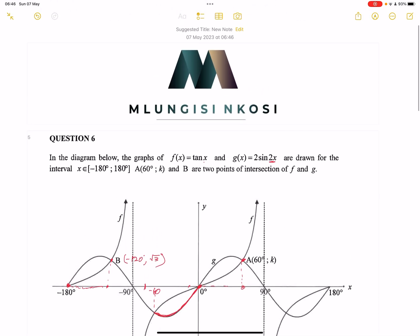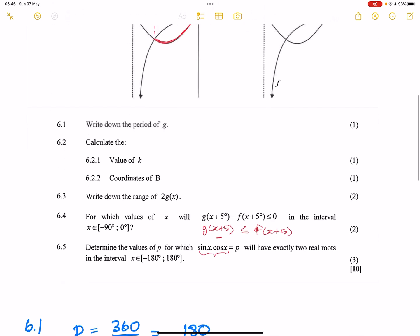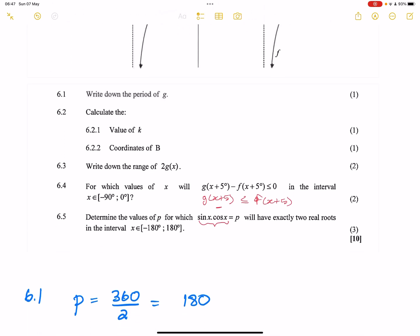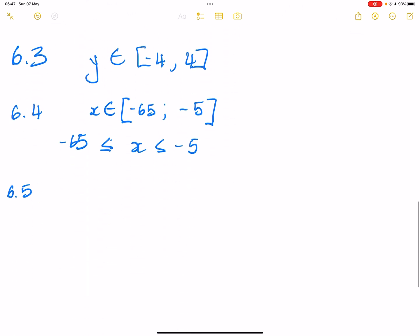Because think about it, when you expand that double angle formula, you will get 2 sin x cos x. So now, what we're going to do, let's try and write that out as the graph of g.